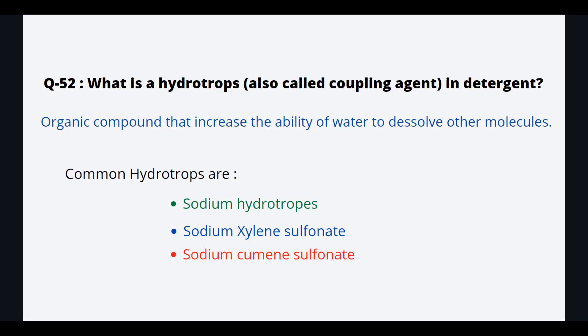What are hydrotropes? Also called coupling agents in detergent. They are organic compounds that increase the ability of water to dissolve other molecules. Common hydrotropes are sodium hydrotrope, sodium xylene sulfonate, and sodium cumene sulfonate.